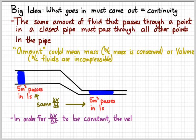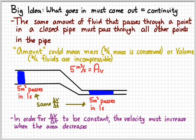So in order for delta V over delta T to be constant, then the velocity has to increase whenever the area decreases. So if the area gets smaller, that means that the velocity has to get larger. So at the first point, the five cubic meters per second is equal to a big area times a small velocity. Whereas at the second point, that same five cubic meters per second is equal to a small area times a big velocity. Wherever the area gets smaller, the fluid has to go faster.